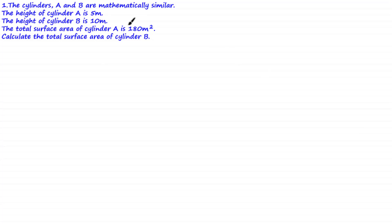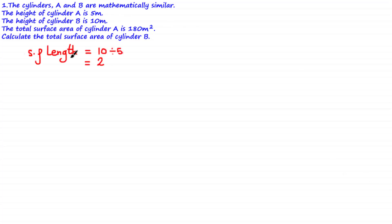Since both shapes are mathematically similar and we've been given the total surface area of cylinder A, if we know the scale factor of surface area, we can calculate the total surface area of cylinder B. We can find the scale factor of surface area by using the given heights to calculate the scale factor of length: 10 divided by 5 equals 2.